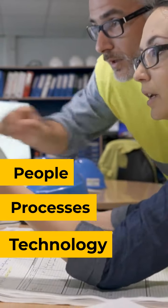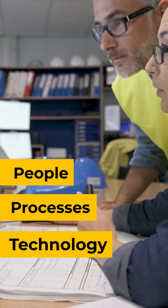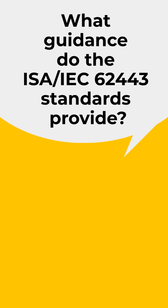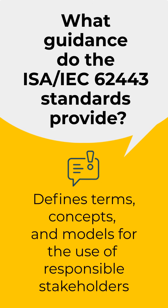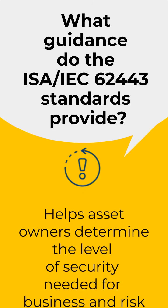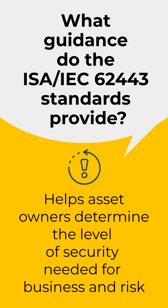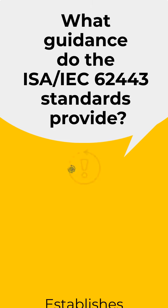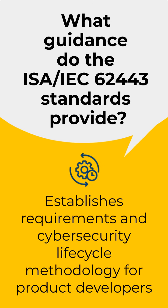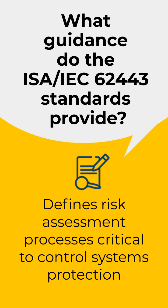The standards address the security of industrial automation and control systems throughout their life cycle. This series of standards defines common terms, concepts, and models that can be used by all stakeholders responsible for control systems cybersecurity, helps asset owners determine the level of security required to meet their unique business and risk needs, establishes a common set of requirements and a cybersecurity life cycle methodology for product developers, and defines the risk assessment processes that are critical to protecting control systems.